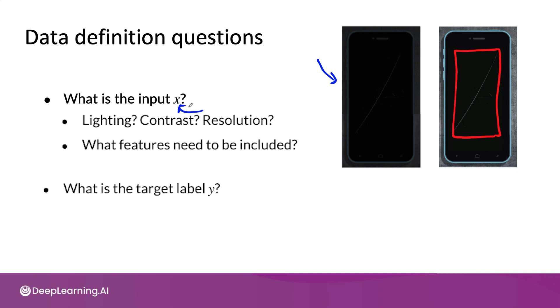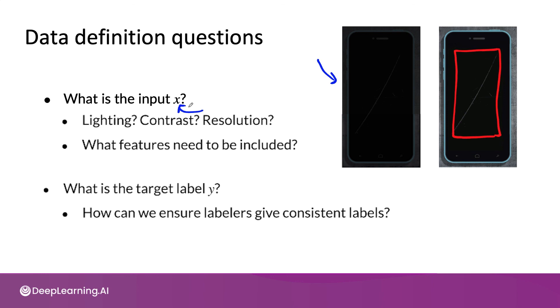In addition to defining the input x, you also have to figure out what the target label y should be. As you've seen from the preceding examples, one key question is how can we ensure labelers give consistent labels? You've seen a variety of problems with labels being ambiguous, and in some cases the input x not being sufficiently informative, such as an image being too dark. Let's take these data issues and put them into a more systematic framework that will allow us to devise solutions in a more systematic way. Let's go on to the next video to take a look.